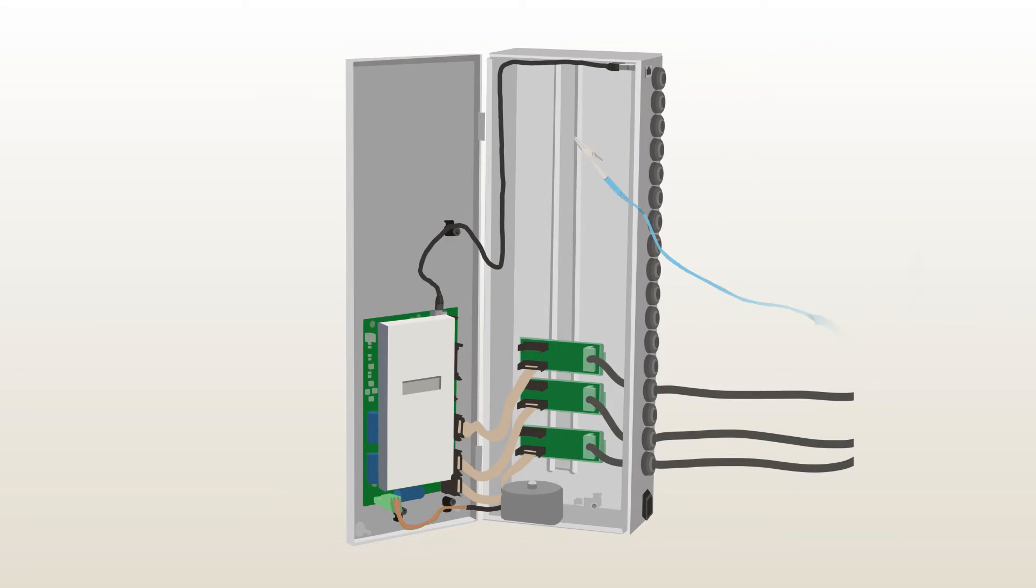Disconnect the following internal connections: the power cable to the CPB, and the internal ethernet cable at the CPB and at the ethernet adapter.